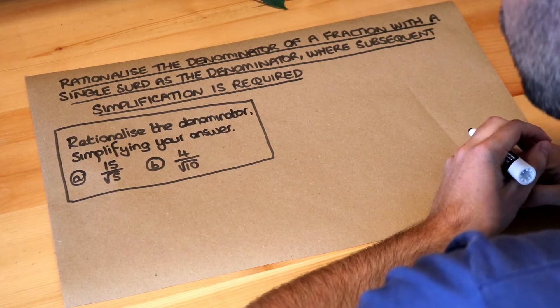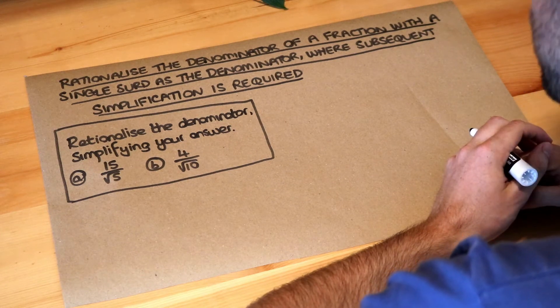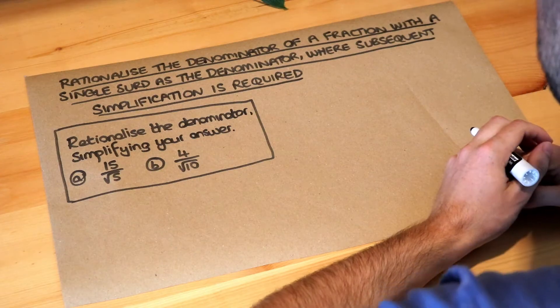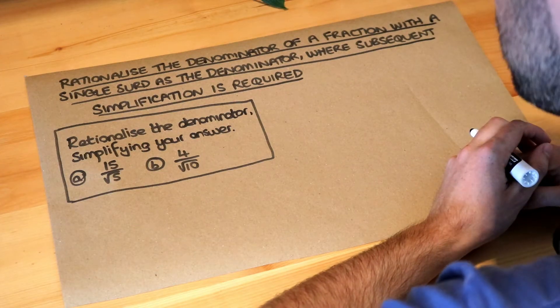Hello and welcome to this Dr. Frost video on rationalizing the denominator of a fraction with a single surd as a denominator where subsequent simplification is required.